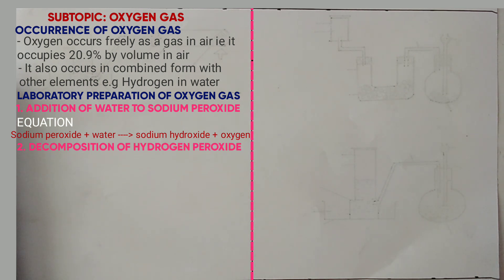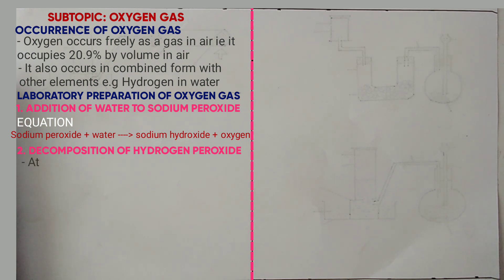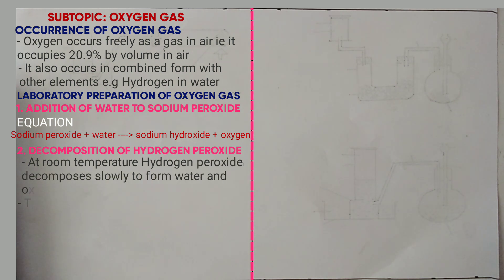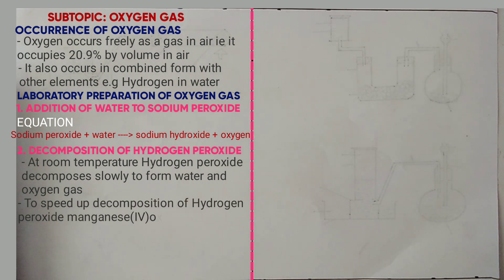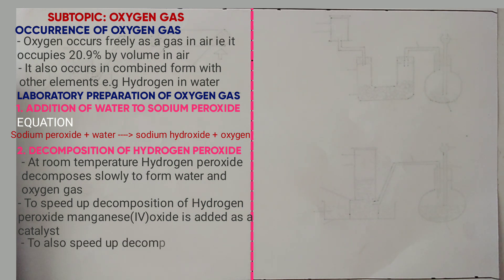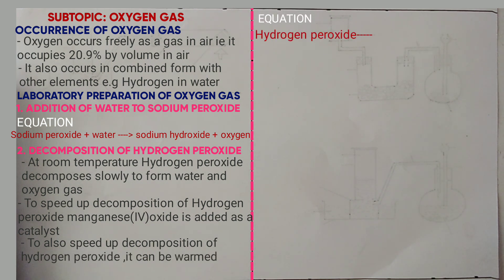Method number two is the decomposition of hydrogen peroxide. At room temperature, hydrogen peroxide decomposes slowly to form water and oxygen gas. To speed up decomposition, we add manganese dioxide as a catalyst. You can also warm the hydrogen peroxide. The equation is: hydrogen peroxide → water plus oxygen gas.